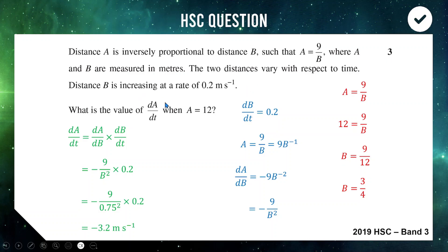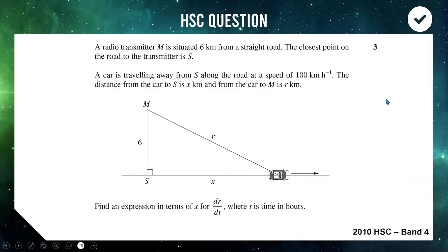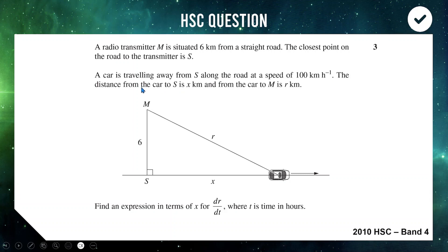That was an easier question because it told us what to find, gave us all the info, and wasn't ambiguous. This next one is more application-heavy and more challenging — a Band 4 question from 2010, also 3 marks. A radio transmitter is 6 km from a straight road. The closest point on the road is S. A car is travelling along the road at a speed of 100 km/h, so X is changing at 100 km/h. The distance from S to the car is X, and the distance from the transmitter M to the car is R.